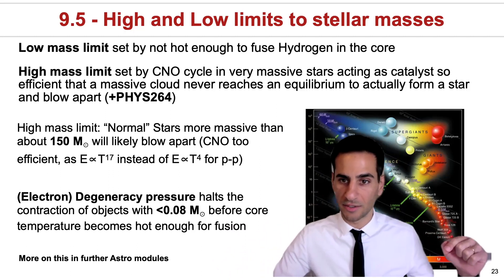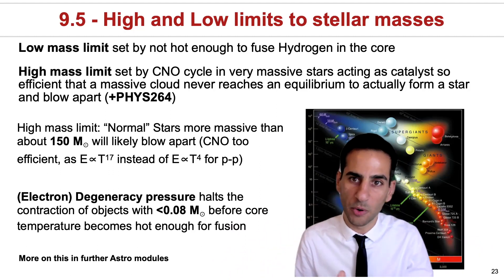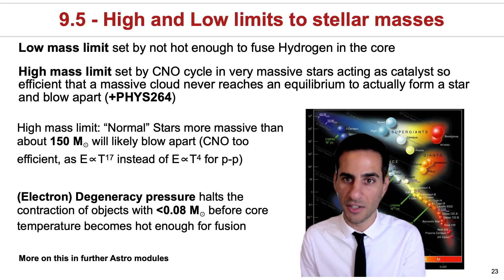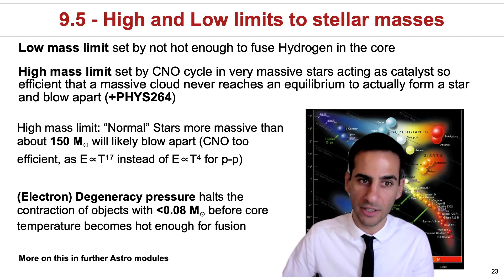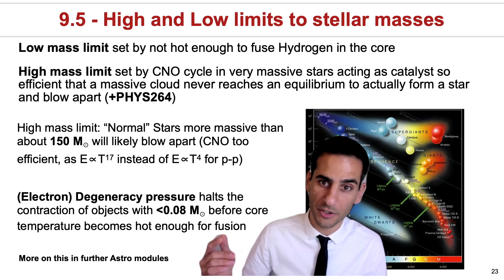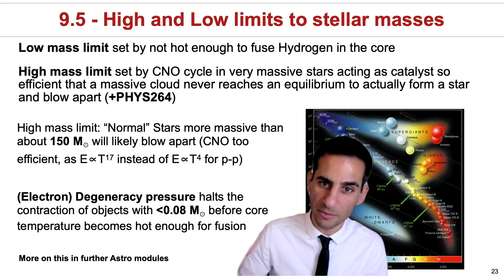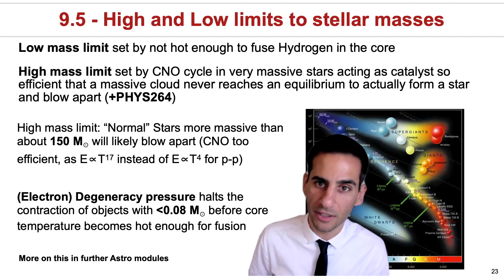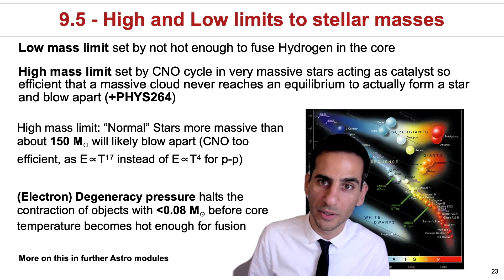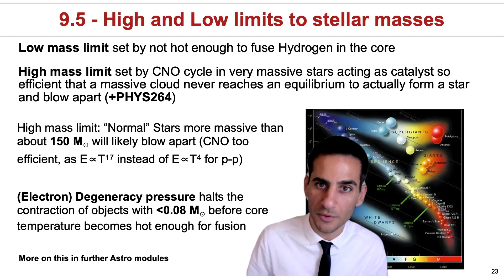For the lowest mass stars, that you can see all the way down to here, they get down to perhaps 0.1 or 0.08 solar masses. Stars with masses below that simply do not exist, because their collapse essentially halts due to electron degeneracy pressure. It means that at some point they become stable, but at that point they're actually not hot enough in the core to start fusing hydrogen into helium. And therefore, they're referred to as failed stars or brown dwarfs.